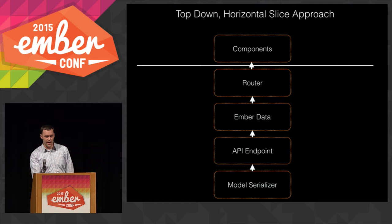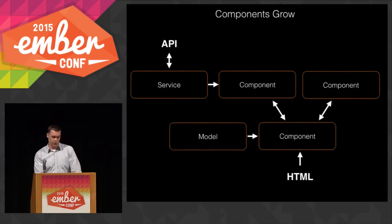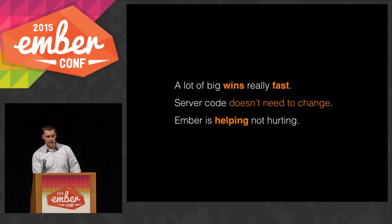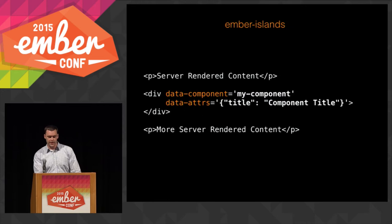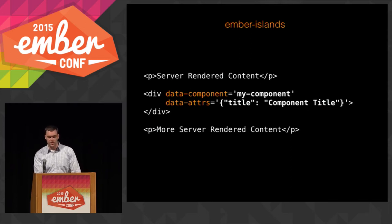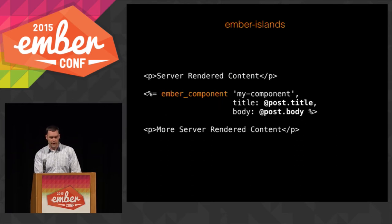I'm advocating an approach where we think more top-down and do a horizontal slice — just grab the component layer first and use that in our refactoring. You could probably stay there pretty long; components are getting pretty awesome. You could extract data models from there, have services shared between components, and get pretty far before you actually want to bring in other parts of the Ember ecosystem. This gives you some wins really fast — your server code doesn't need to change very much, and Ember's helping right away instead of slowing you down.